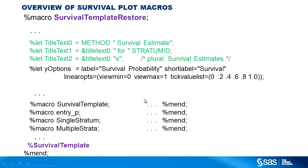Now let's go into macros. There is a macro we provide called Survival Template Restore. It defines a number of macro variables and a number of macros. We see some macro variables that define how the title is displayed — there are two versions, one for the single stratum case and one for the multiple strata case, with text shared by both. There's a macro variable for Y options and many other macro variables. The Survival Template Restore macro provides all these macros and macro variables, and it calls the Survival Template macro, which compiles all the templates.